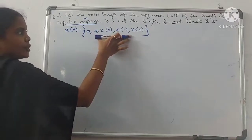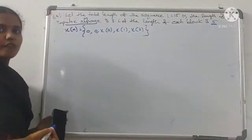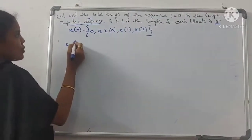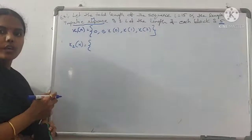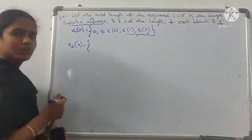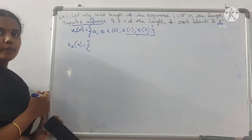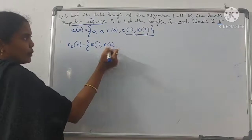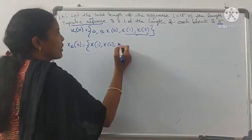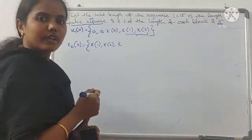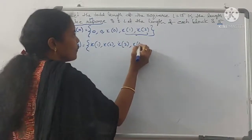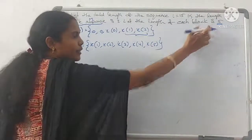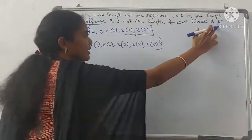The block length is 5. For x2(n), you take the last two data from the sequence x(n) — that is, x(1) and x(2) — then x(2), x(3), x(4), and x(5), so x2(n) also has length 5.